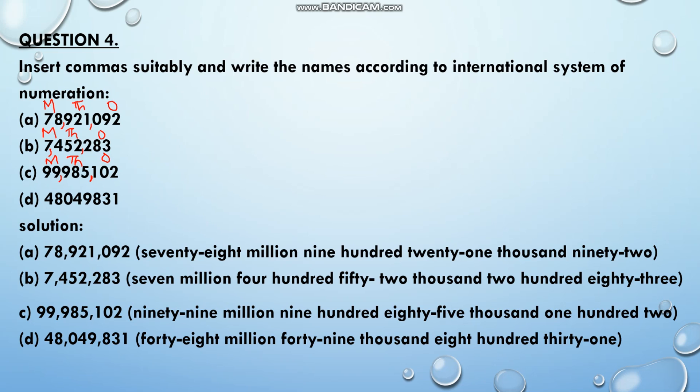Now the next one. From the right, after three digits put the first comma, then after the next three digits put the next comma. Here 831 is in the ones period, 049 is in the thousands period, and 48 is in the millions period. So the number reads: 48,049,831.